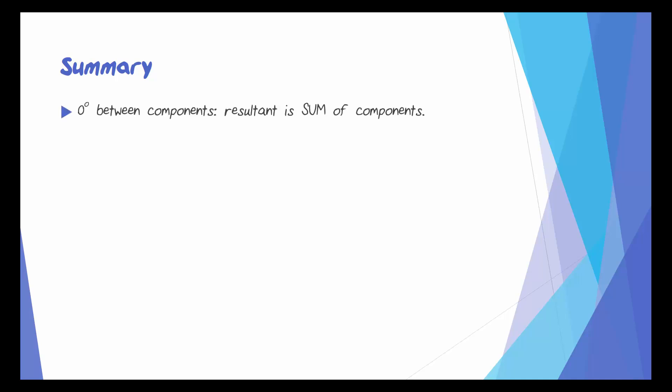Let's summarize. When there's zero degrees between the components, the resultant is just the sum of the components, and this is the maximum possible resultant.